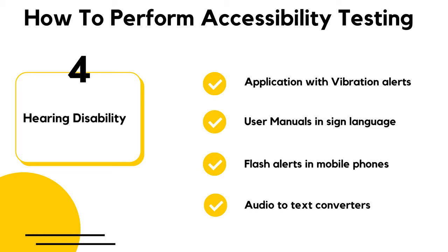Some example test cases for accessibility testing: 1st, verify if there are shortcuts present for menu items. 2nd, verify if the user manual is provided and described in simple words. 3rd, verify if font sizes can be enlarged. 4th, verify if captions, labels, and headings are available and descriptive. 5th, verify if the user can access the video and audio controls.